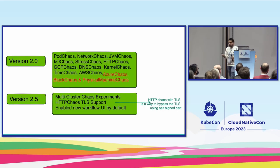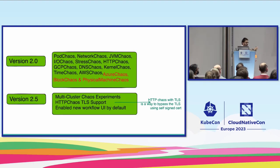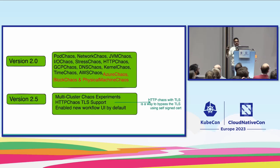What's new in chaos mesh? The last version with major features was 2.4. I'll be covering what's new in 2.5. Already in previous versions you had pod, network, JVM, IO, stress, HTTP, GCP, DNS, kernel, and AWS chaos types — which are cloud-provider-specific chaos. Then in 2.4, Azure, block, and physical machine chaos were introduced.